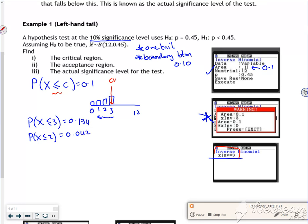Now this one, because I'm doing the 10% significance level, that one there is bigger than 0.10, so that's a no. This one is less than 0.10, so that's a yes. So my critical region is that x is less than or equal to 2 there.